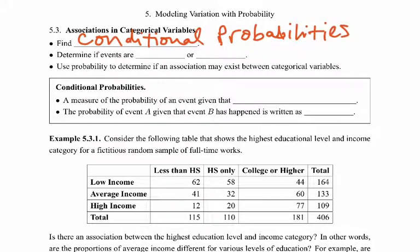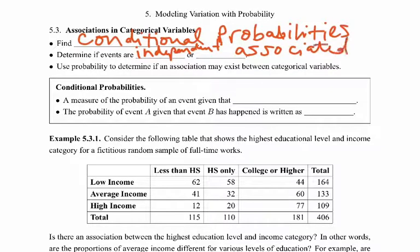The second objective is to determine if events are independent or associated, and use the probabilities to determine if an association may exist. All of what we're looking at are categorical variables — for example, if you flip a coin, does it land on heads or tails? That's categorical data. We're looking for relationships between these categorical variables, and that's what we're going to use these probabilities to help us figure out.